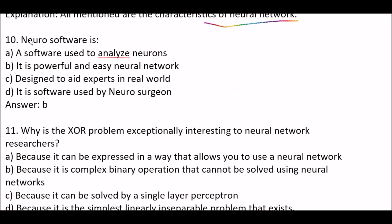Next question: Neuro software is — Option A: software used to analyze neurons. Option B: a powerful and easy neural network. Option C: designed to aid experts in the real world. Option D: software used by neurosurgeons. The right answer is option B — Neuro software is a powerful and easy neural network.